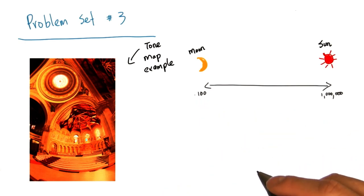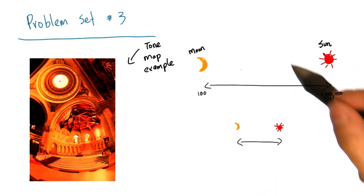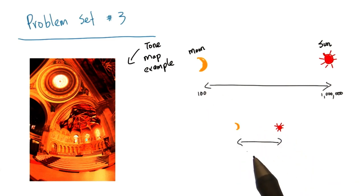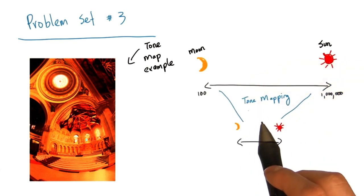Unfortunately, our computer screen can only display a narrow range of brightness values. Think of this spectrum as the range of brightness values that our computer screens can display. So tone mapping is the problem of taking the brightness values that we see in the real world and mapping them down into a tiny range of brightness values that we can display on our computer screens.